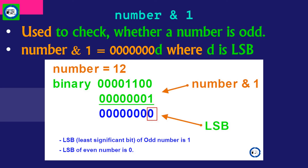AND between a number and one is used to check whether a number is odd. The result of number AND one gives a result where the least significant bit is used to check whether the number is odd or even. Taking number 12 as an example, its binary form is 0 0 0 0 1 1 0 0. When ANDed with one, we get 0 0 0 0 0 0 0 0, and the least significant bit is 0, which means the number is even.